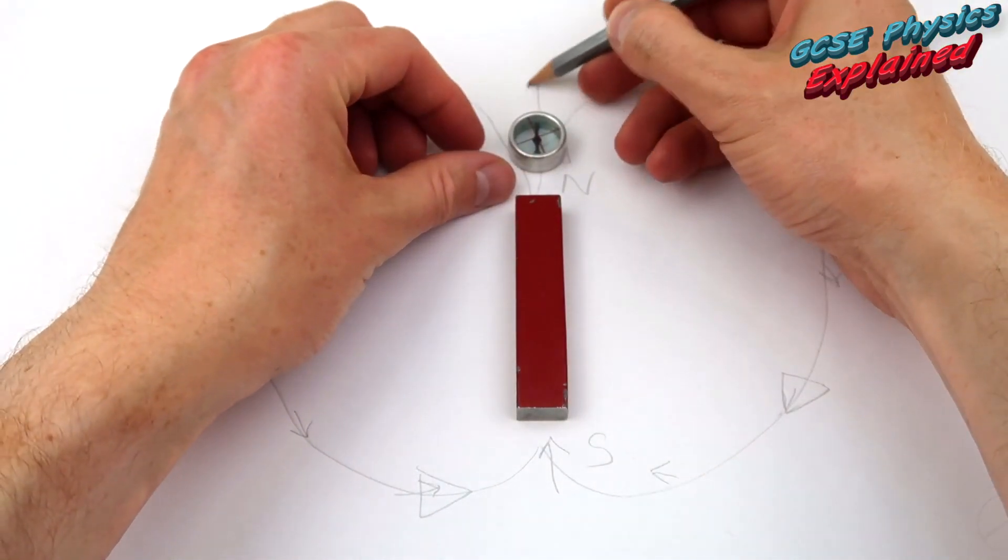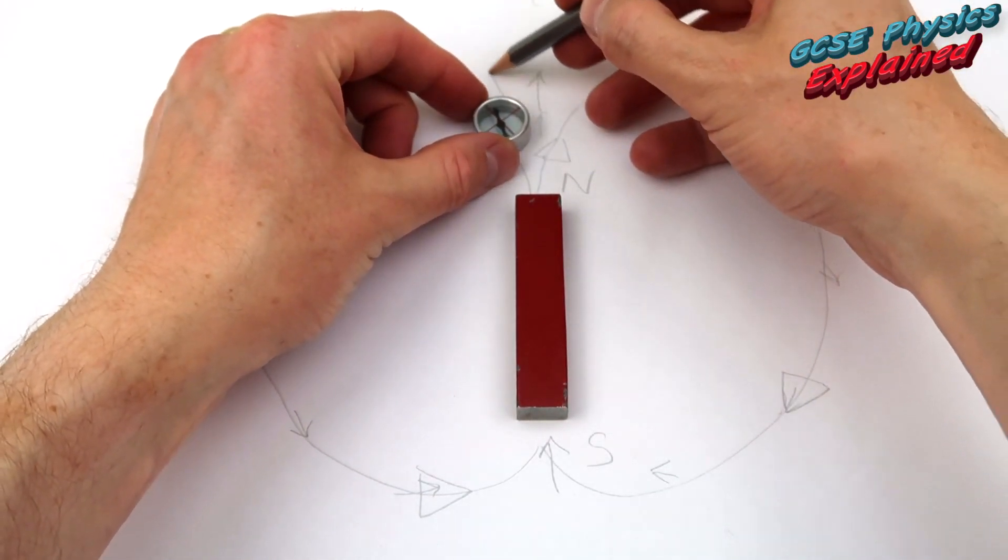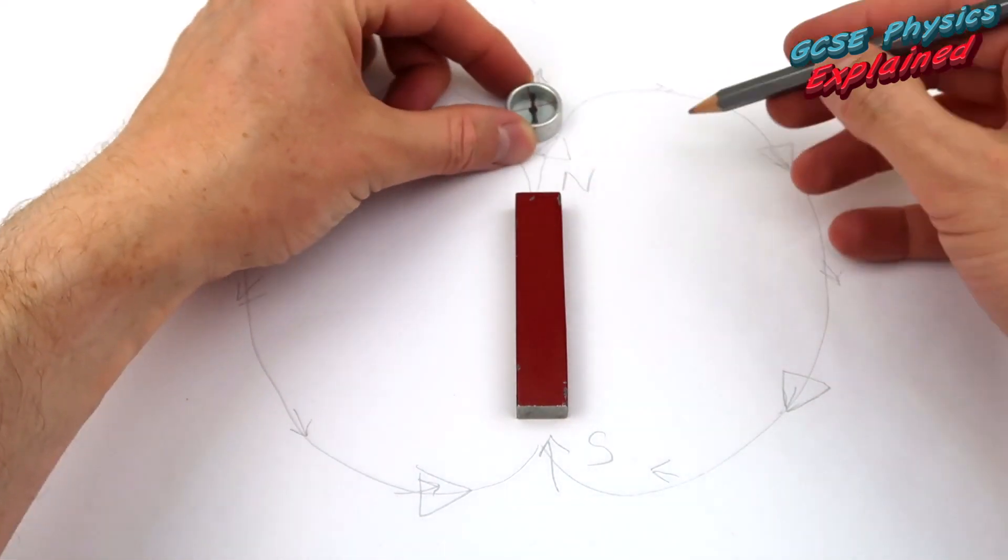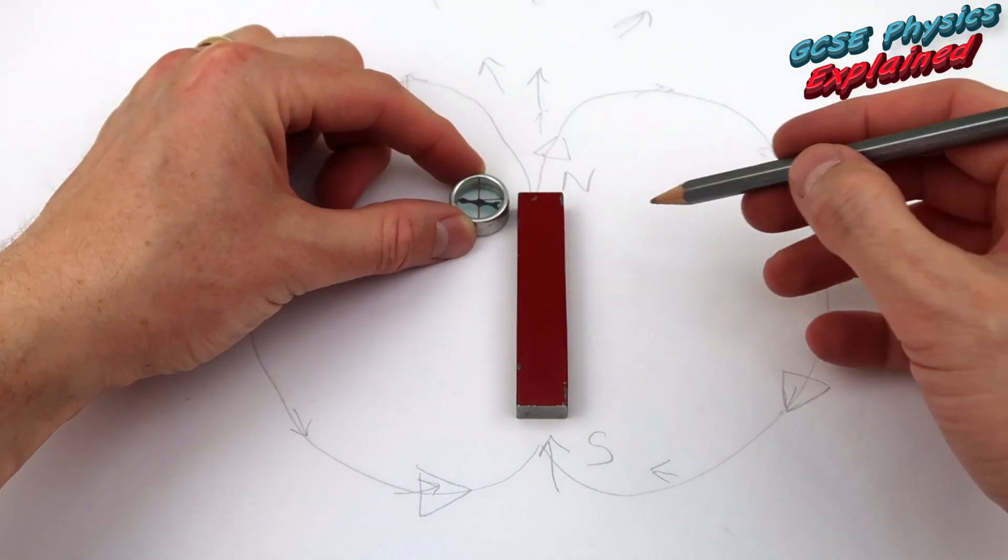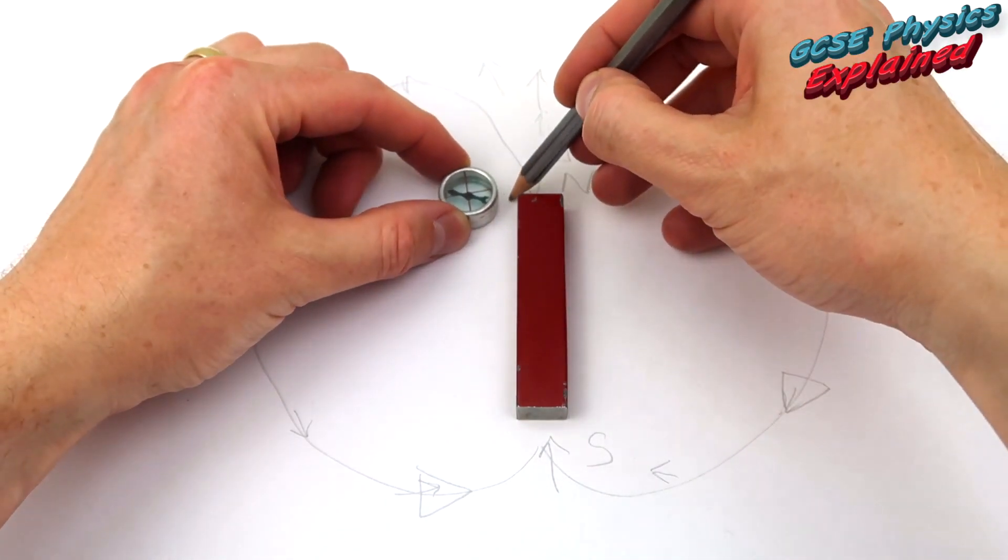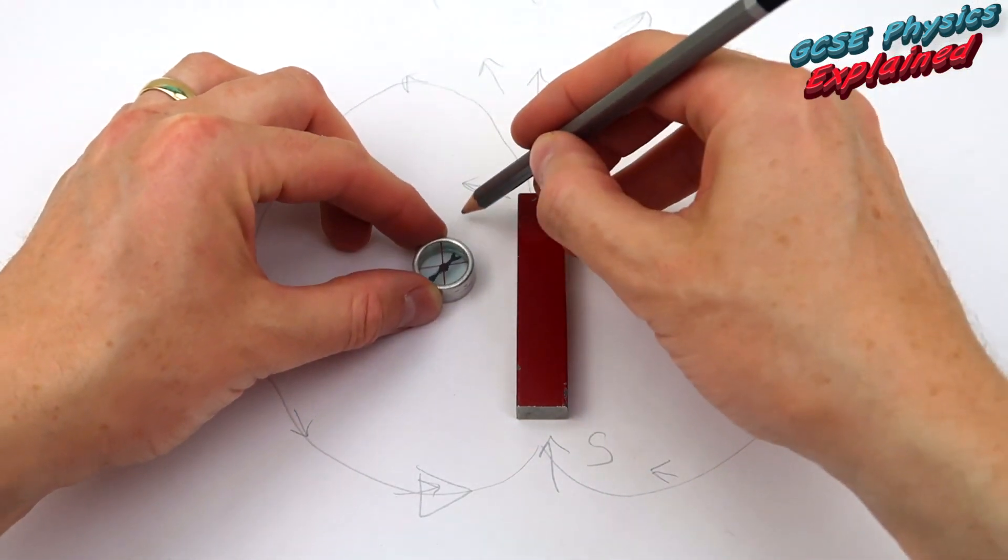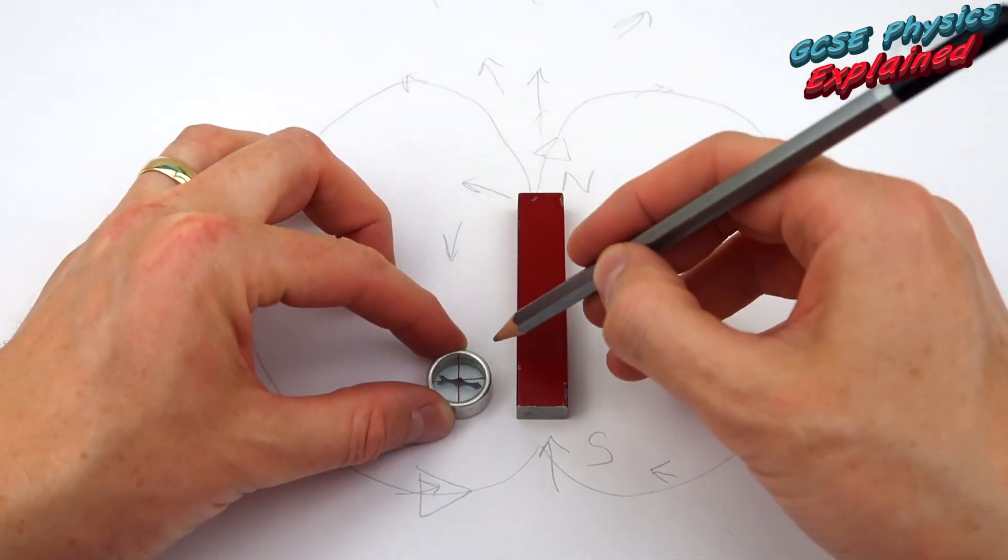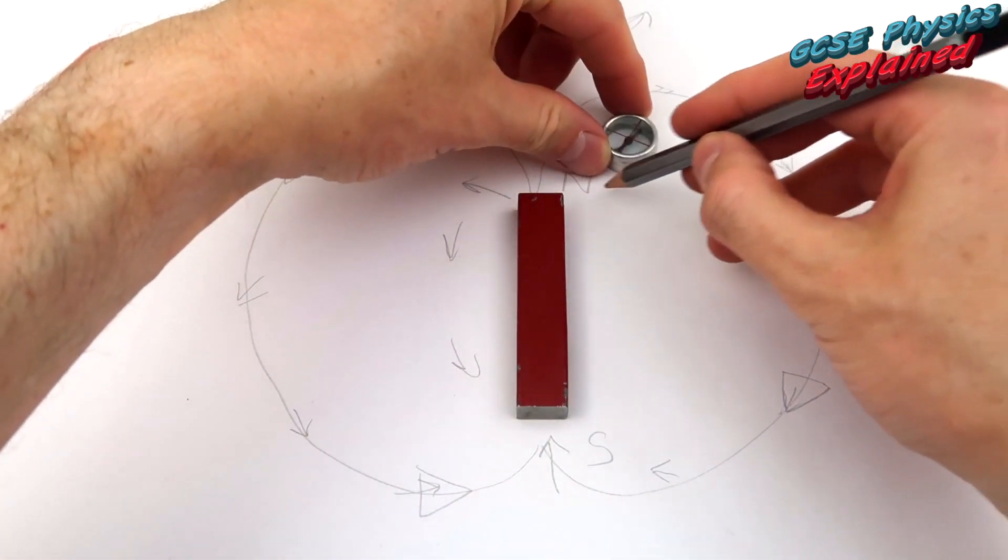You can see it's pointing upwards. It's pointing across to that way. If I go over there, it's pointing over that way. Now you can see if you get close to the magnet, it's turning very quickly. That's on both sides.